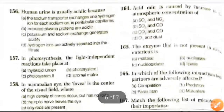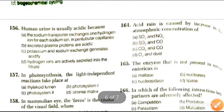Next question: acid rain is caused by increase in atmospheric concentration of SO2 and NO2, SO3 and CO, CO2 and CO, or O3. The answer is SO2 and NO2.